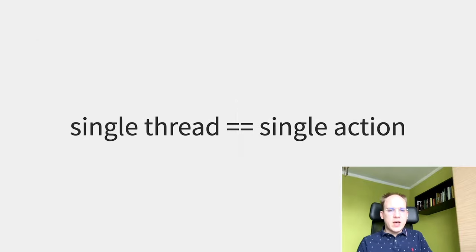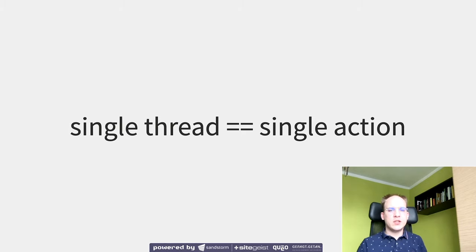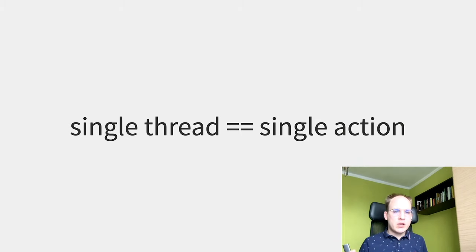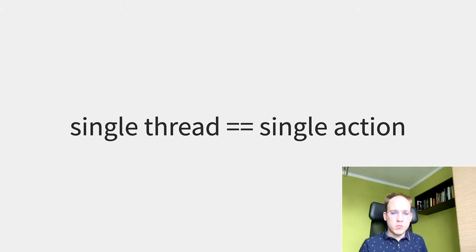We need to start from the fact that JavaScript is a single-threaded language. This is very important, because it means that single-thread is a single action taken by the program at a particular time. So the question comes: how does JavaScript deal with parallel actions? Let's say you are reading a file from the disk, and in the meantime you are performing other actions in your program. This is done in JavaScript by using the event loop mechanism, which we are going to cover deeply just within the next minutes.